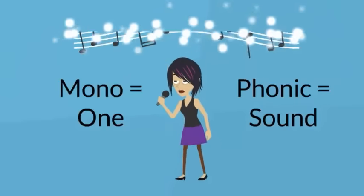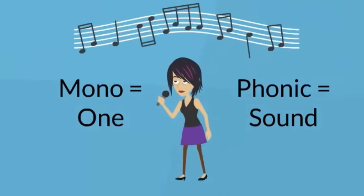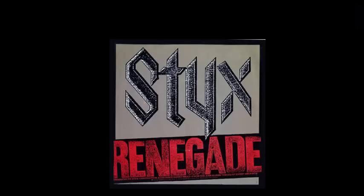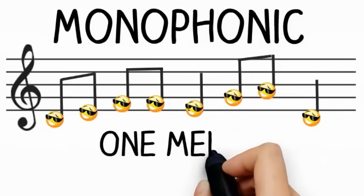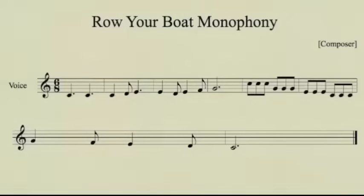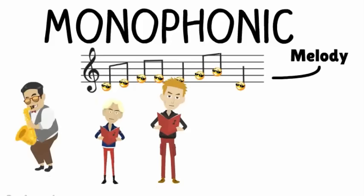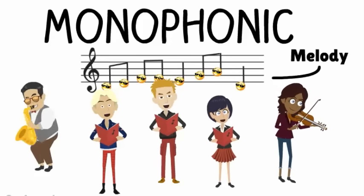The most basic texture is called monophonic. Monophonic texture has only one layer: a melody. With monophony, it doesn't matter how many instruments and or voices are present, as long as they are all singing or playing the same thing at the same time.